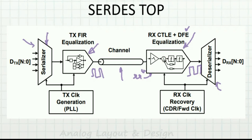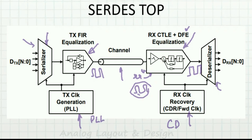To do all these things, we also need a clock as reference. When we transmit and receive the data, we need a clock, and that clock is generated by a Phase-Locked Loop (PLL). At the receiver side, we not only recover the data — we also recover the clock from the data itself. By observing the incoming data, we know at what frequency it is coming and recover the clock from it. This is known as Clock and Data Recovery (CDR), which is also a kind of PLL.